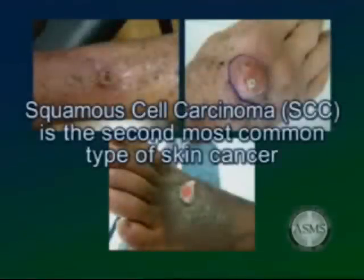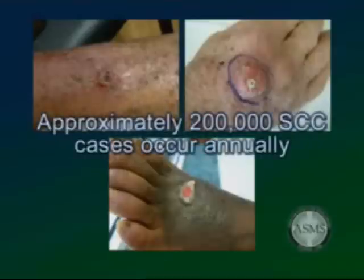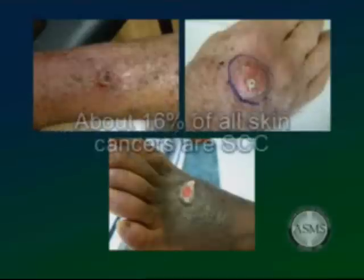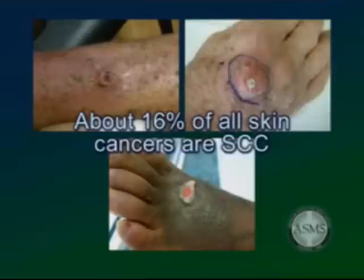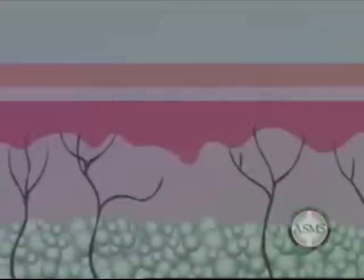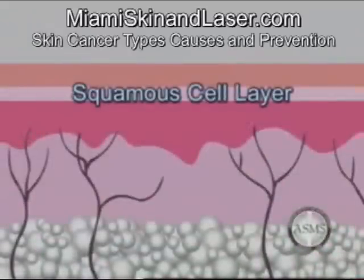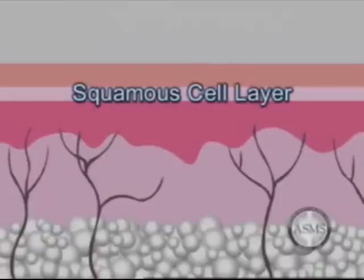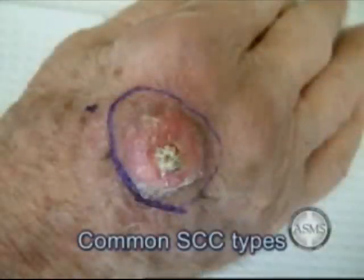Squamous cell carcinoma (SCC) is the second most common type of skin cancer in the United States. Approximately 200,000 cases occur annually, and SCC is responsible for about 16% of all skin cancer cases. This cancer develops from cells in the epidermis known as squamous cells. Squamous cell carcinomas are more dangerous than BCC because they have a greater tendency to recur after surgery and to metastasize to other organs in the body.